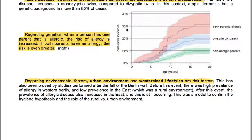Regarding environmental factors, urban environment and western lifestyle are risk factors. This has been proven by studies after the fall of the Berlin Wall: before the event, there was high prevalence of allergy in western Berlin but low prevalence in the east, which was a rural environment. After the event, allergic disease prevalence also increased in the east. This was a model confirming the hygiene hypothesis and the role of rural versus urban environment.